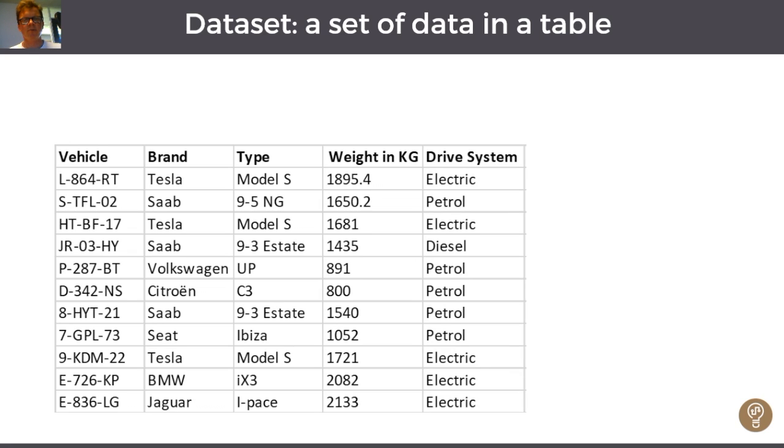The fifth column contains the drive system, and it's categorized data or labeled data, and it's also a variable.